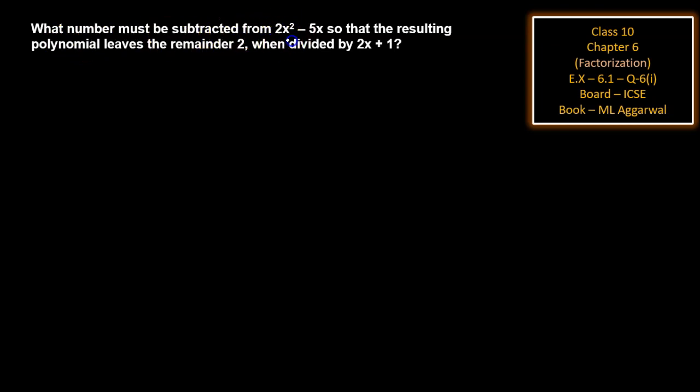subtracted from 2x² - 5x so that the resulting polynomial leaves remainder 2 when divided by 2x + 1? By using the remainder theorem,